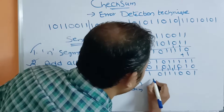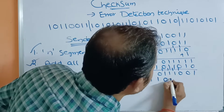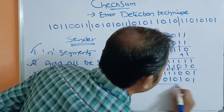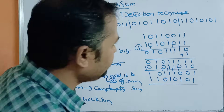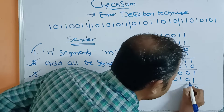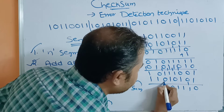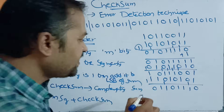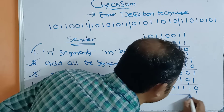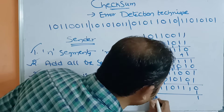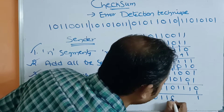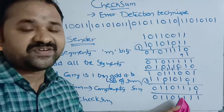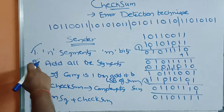The fourth segment is 11010101. We add it to the current sum. 1 plus 1 gives 0 with carry 1 in several positions. Since carry is 1, we add this carry to the least significant bit of the sum, and we get the final sum after adding all 4 segments.